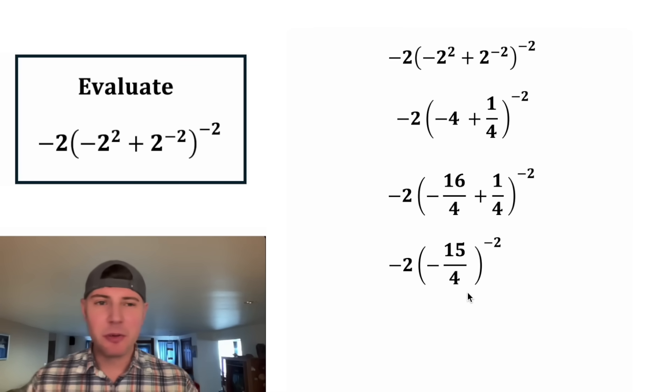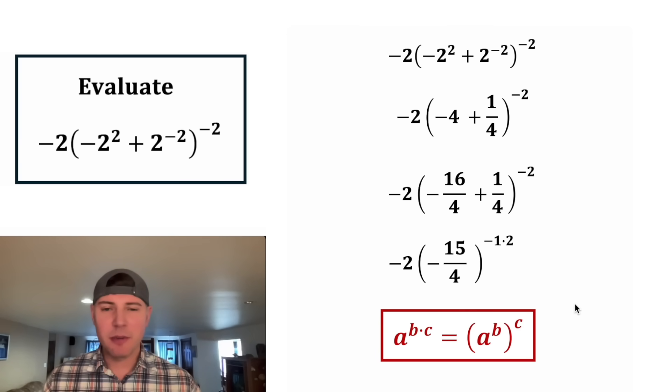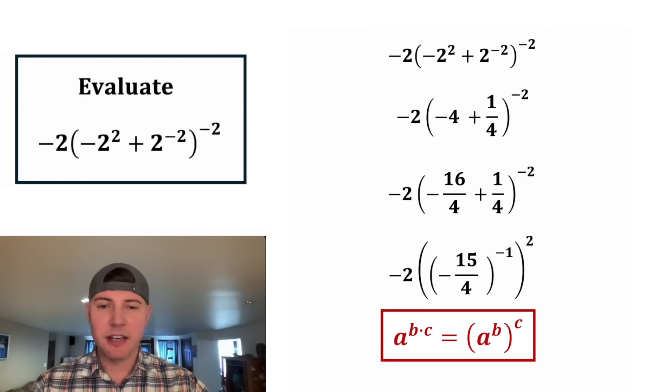This negative two exponent, we can break it apart into negative one times two. And then using these notes, anytime you have a to the power of b times c, you can rewrite that as a to the b whole thing to the c. So we can take this negative one and put it on the inside of the parentheses.